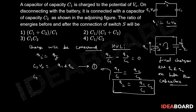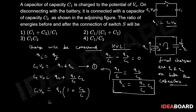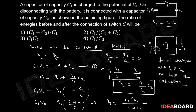Substituting Q2 = (Q1/C1)·C2 into C1·V0 = Q1 + Q2, we take Q1 common to get C1·V0 = Q1·(1 + C2/C1) = Q1·(C1 + C2)/C1. Solving, we get Q1 = C1²·V0 / (C1 + C2).